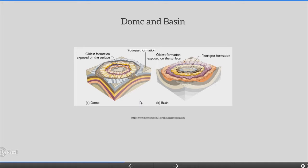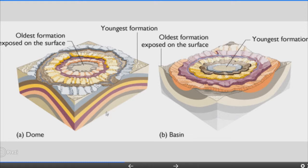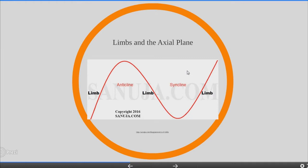Domes and basins. Domes and basins are structures with approximately circular or slightly elongated closed outcrop patterns. Domes are convex upwards. Basins are concave upwards.